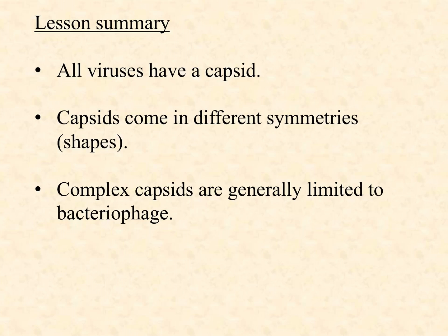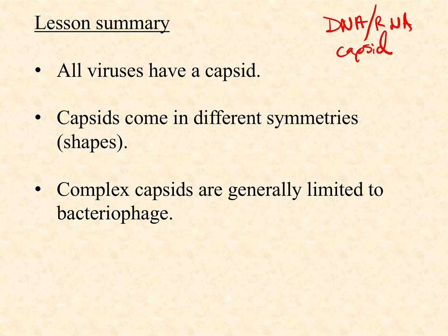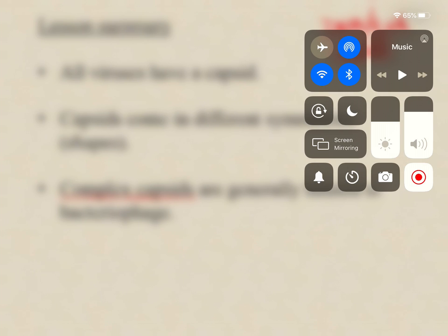To summarize: all viruses must have a capsid — they all need DNA or RNA plus a capsid, because that's the basic definition of a virus. Some also have an envelope. Capsids come in three different symmetries or shapes. When it comes to complex symmetry, we're almost exclusively talking about bacteriophage — an important group of viruses that infect bacteria. Combine this with what you learned about nucleic acid types, and next we'll look at optional components: the envelope and some possible enzymes that some viruses package and carry with them.